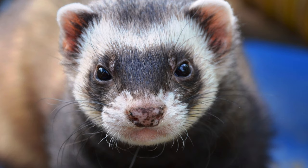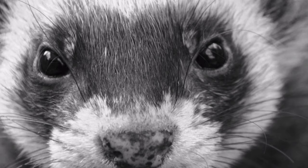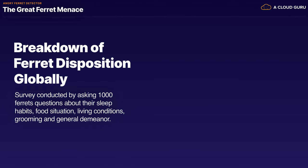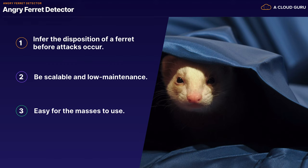Sure, ferrets are cute and playful and innocent looking, but how much do we really know about the sinister side lurking just beneath the surface? There is a great ferret menace spreading across the globe. Unprovoked ferret violence we see almost weekly in news and other media. A recent survey showed that 44% of ferrets harbored some type of anger, be it repressed or overt. I felt the duty to create an angry ferret detector that would infer the disposition of a ferret before the attack could occur. It should be scalable, low maintenance, easy for the masses to use, and include a gratuitous use of machine learning — just because.